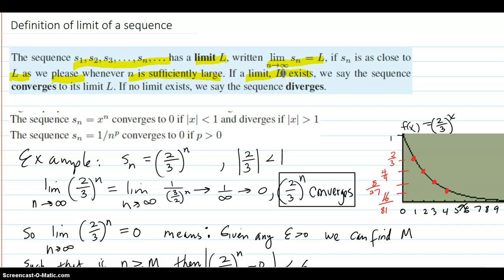And if the limit exists, then the sequence converges and it converges to that limit. If no limit exists, we say the sequence diverges.